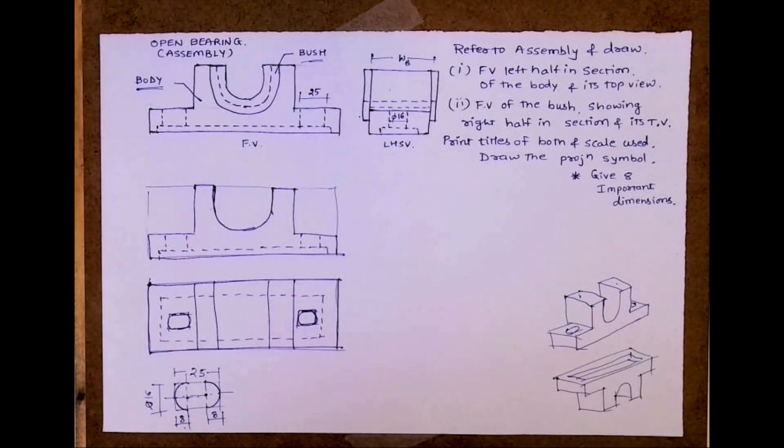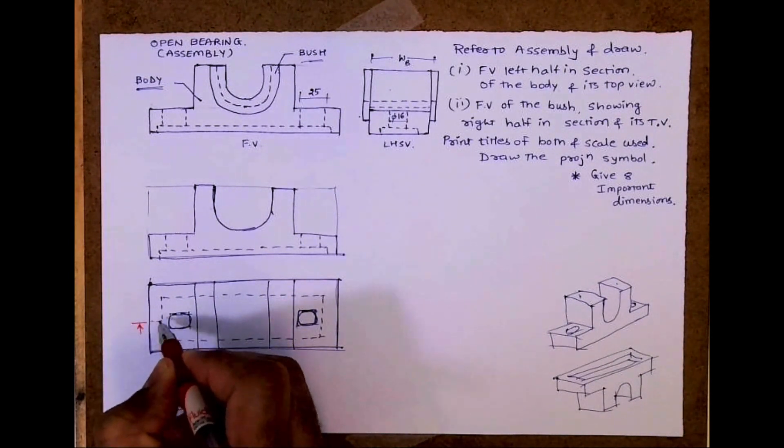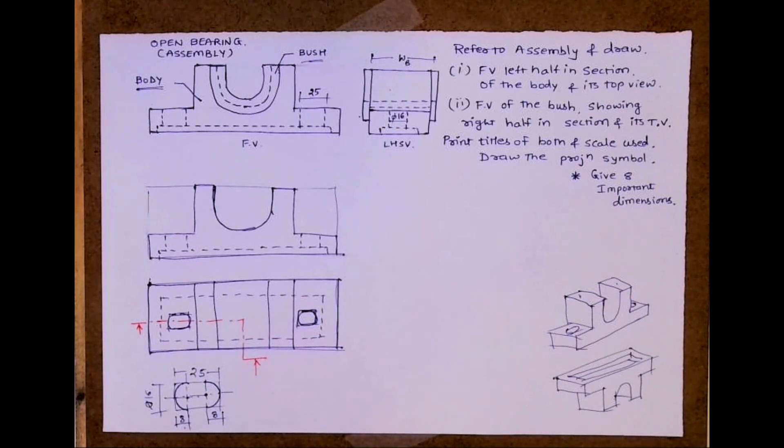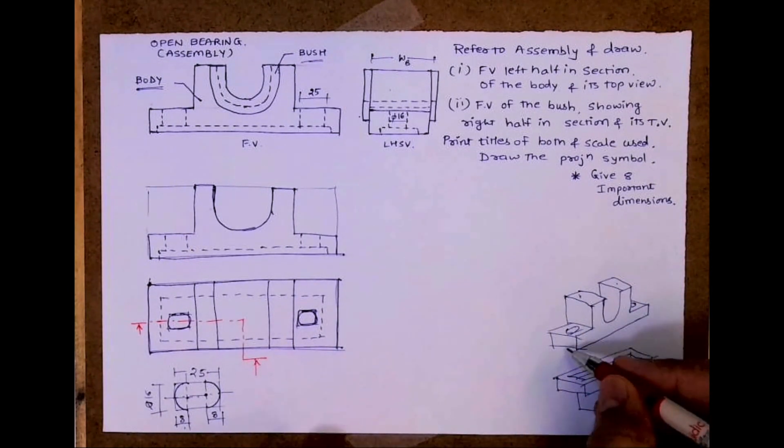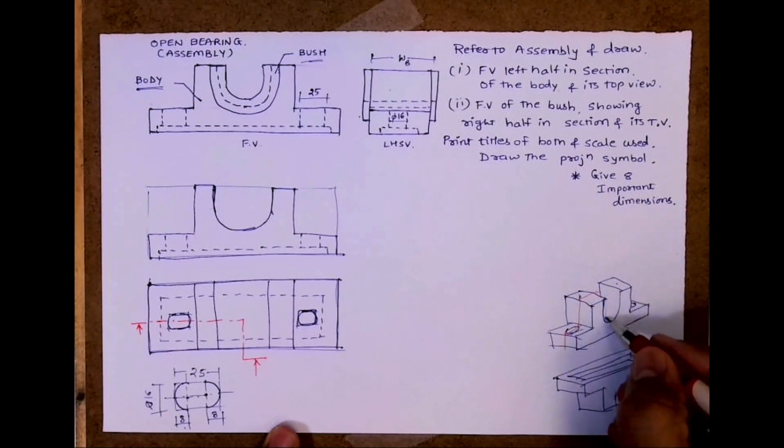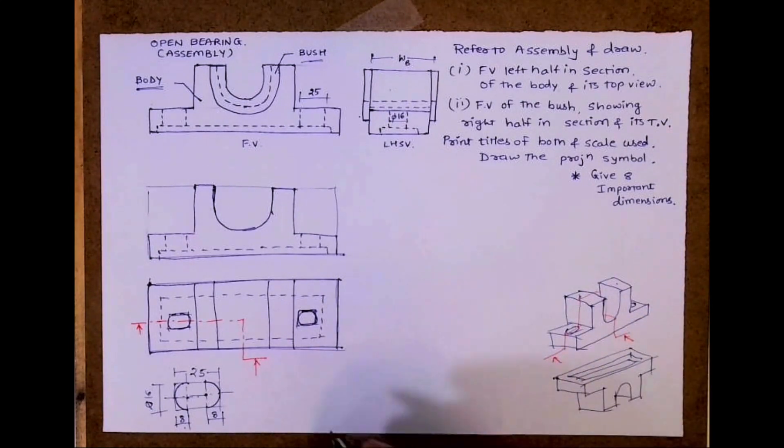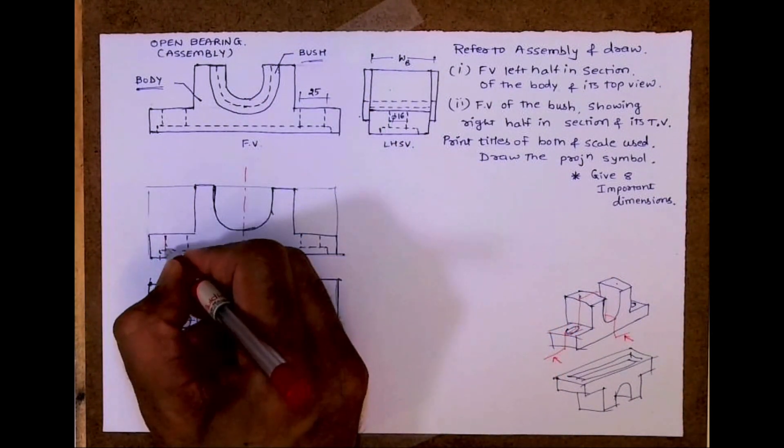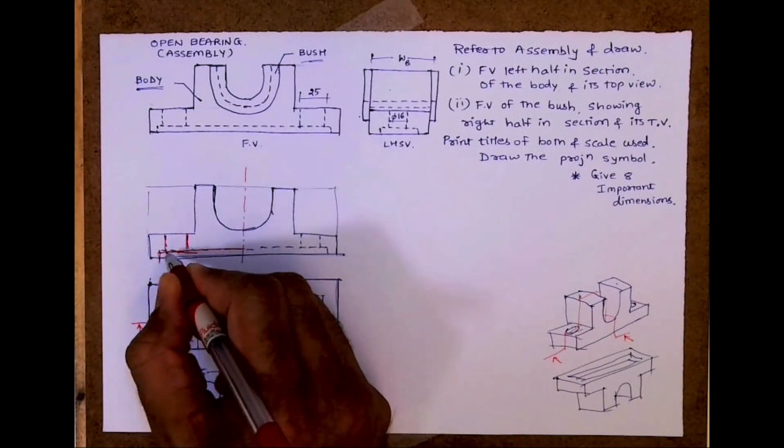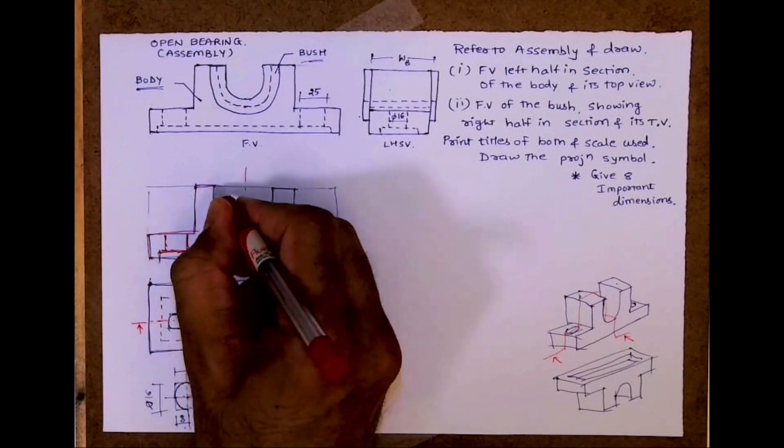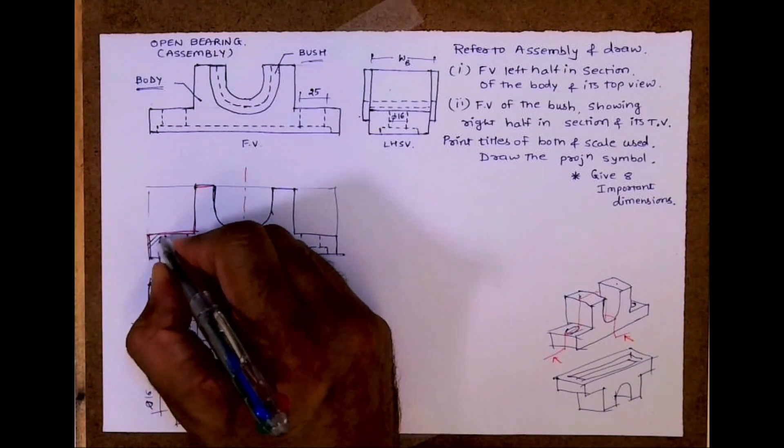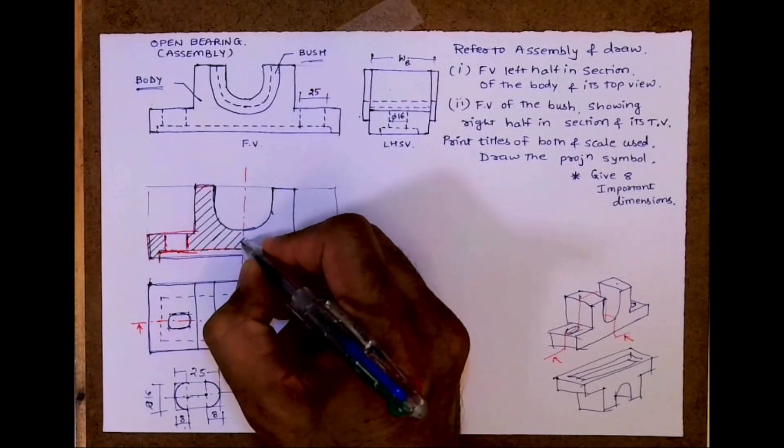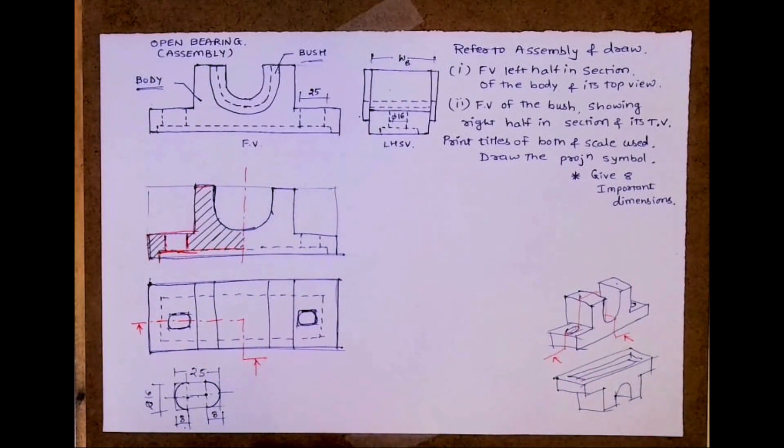Now they want left half in section. So body is done. Now I want to draw left half in section. So I will draw this cutting plane line. See. It will be like this. So this much portion we are removing. So I am just visualizing it, that if I will remove how it will look. In this, this will be dark. See. This will be hatched. This is how it will look in section. The left half in section.